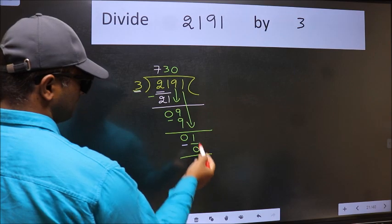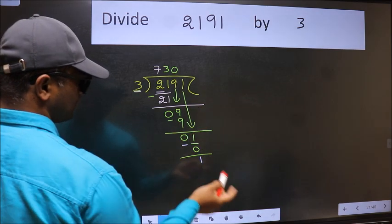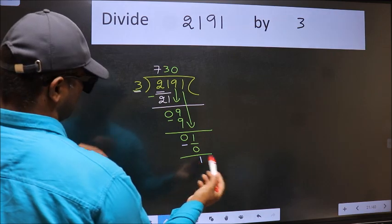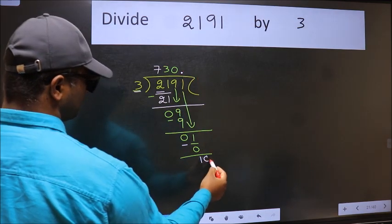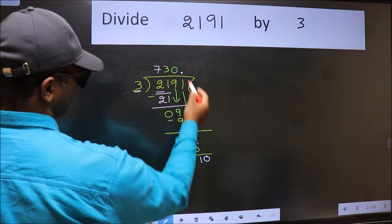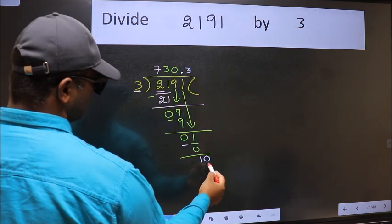Over here, we did not bring any number down. And 1 is smaller than 3. So now we can put dot and take 0. So 10. A number close to 10 in 3 table is 3 times 3 is 9.